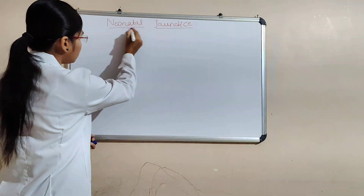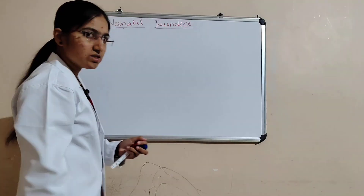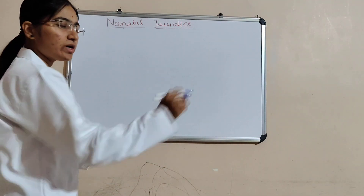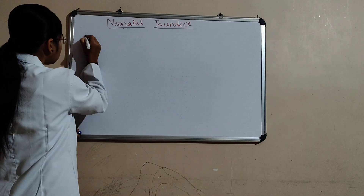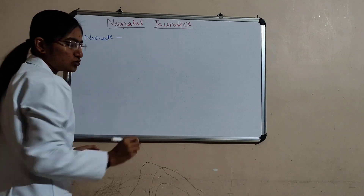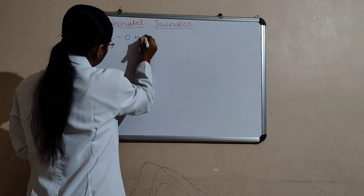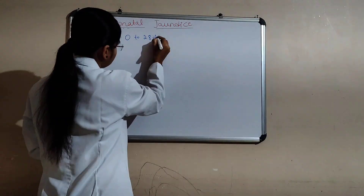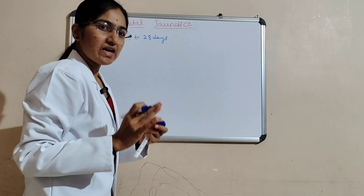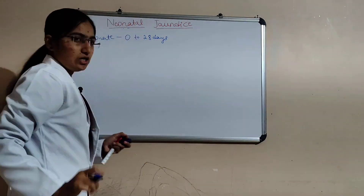Here we will first look at the word 'neonatal.' There are two parts: neonate and jaundice. First, what is a neonate? The neonate age group is 0 to 28 days — the first 28 days of life. That is referred to as the neonate.